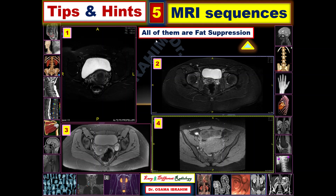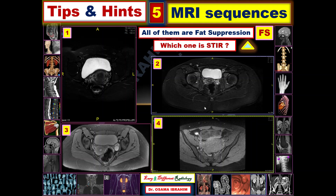As usual, I start my presentations with a question. Today's question: all of these four images are fat suppression sequences, referred to by FS, meaning fat suppression MRI sequences. However, all of them are different MRI sequences. Which one of them is the STIR image?